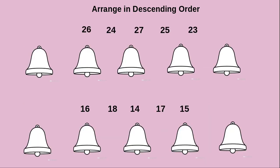Next we will see some more examples. Now we are going to see how to arrange 2-digit numbers in descending order. First we look at the last digit: 6, 4, 7, 5, 3. The greatest last digit is 7, so 27 is the greatest number and we write 27 first. After that the next greatest is 26, then 25, then 24. At last, 23 is remaining, so we write it as it is.